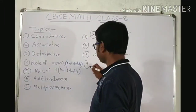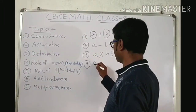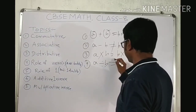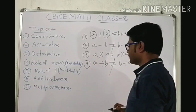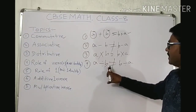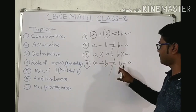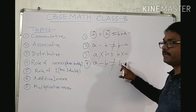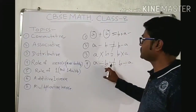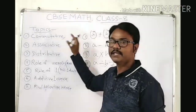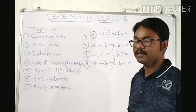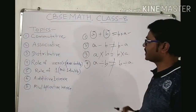Next one is division. If A and B are rational numbers, then A divided by B compared to B divided by A — the value is not the same. Division is not commutative for rational numbers.